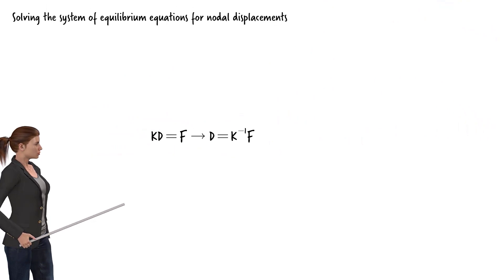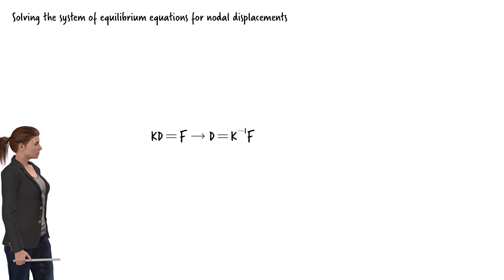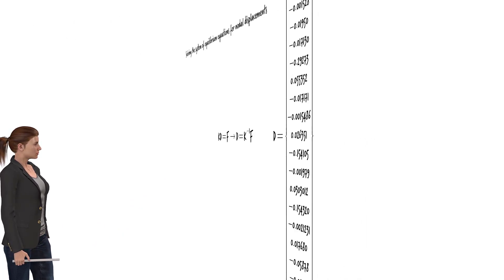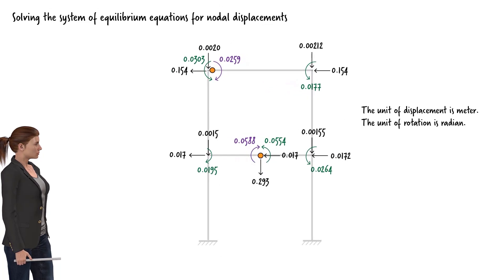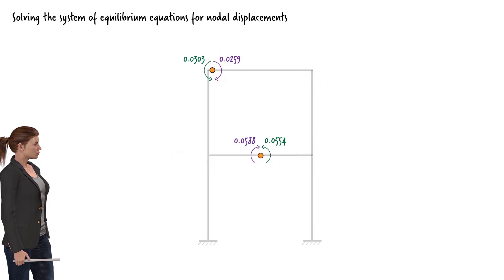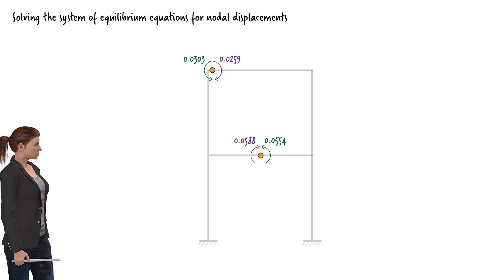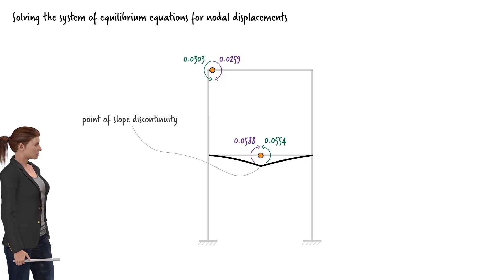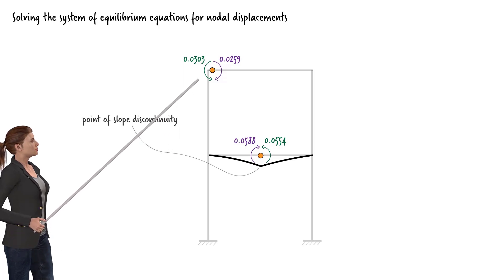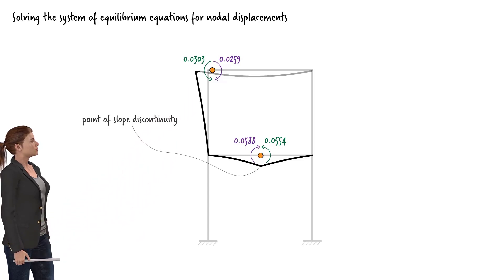Now that we have the system stiffness matrix K and the system force vector F, we can calculate the system displacement vector D, where D equals K inverse times F. Here are the nodal displacements of the structure. Note the change in rotation at each internal hinge: at node 4 there is a clockwise rotation at one beam end and a counterclockwise rotation at the other, creating a discontinuity in the slope of the elastic curve consistent with internal hinge behavior. At node 6, the column has a counterclockwise rotation while the beam rotates clockwise, again resulting in a slope discontinuity.